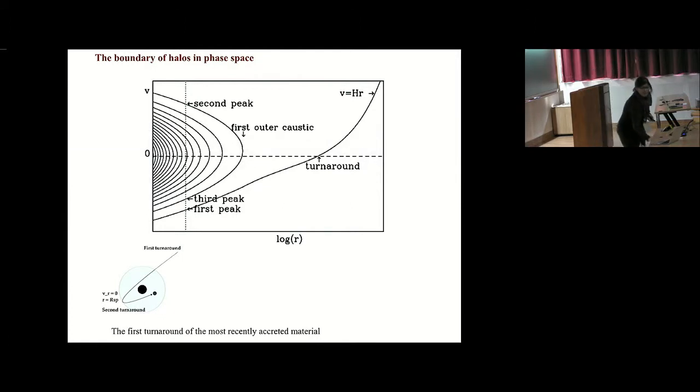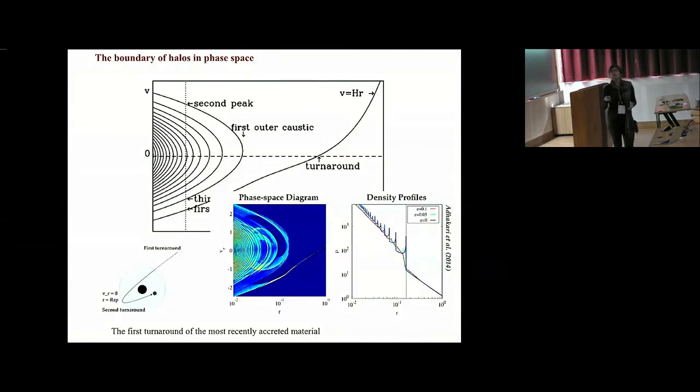The density profile is essentially a projection, an integration of the phase-space in the velocity direction. If you take the phase-space and project it for this idealized case to get the density profile, you have density as a function of r. At locations of these turnarounds, you get these really sharp caustics in idealized simulations. That's because the radial velocities are turning around, approaching zero, so things spend a longer time over there. You see these caustics and the outermost caustic basically defines where the edge of your halo would be.